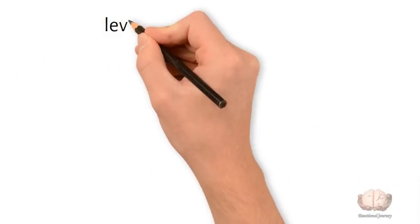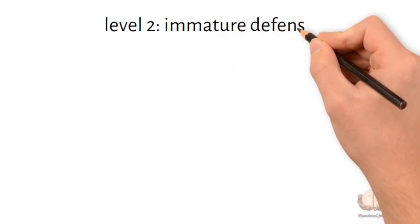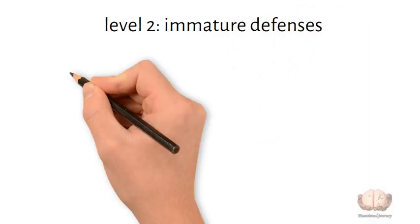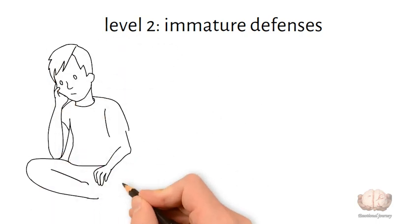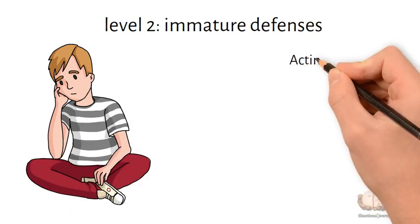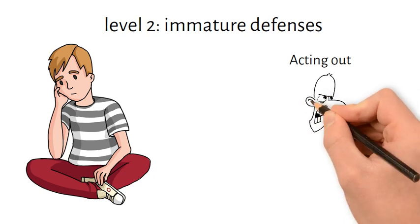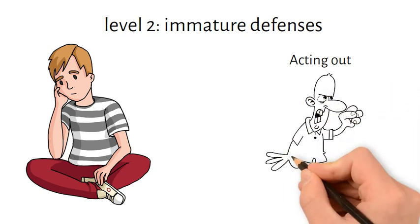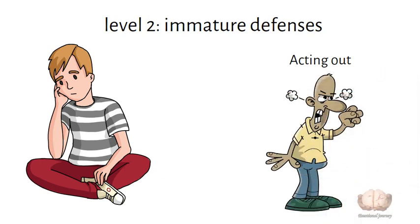Level two: immature defenses. The immature defenses are considered childish or developmentally primitive coping mechanisms. They are commonly seen in less severe personality disorders as well as normal childhood development. Some examples include acting out: expressing inner conflicts or feelings through actions rather than words. For example, instead of talking about feelings, a person starts fights or engages in reckless behavior.